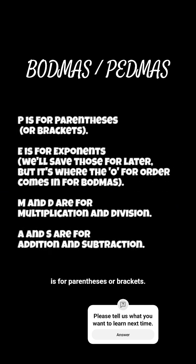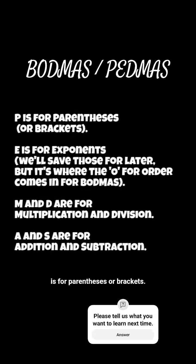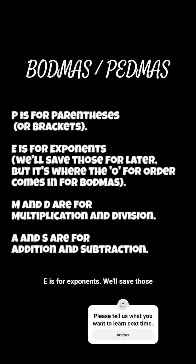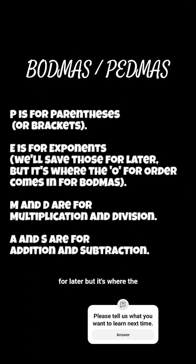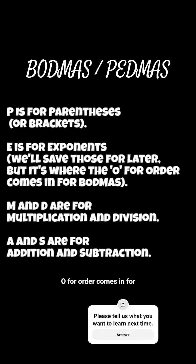P is for parentheses or brackets. E is for exponents — we'll save those for later, but it's where the O for order comes in for BODMAS.